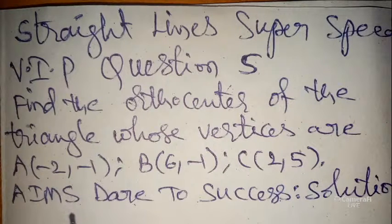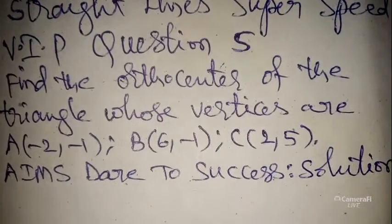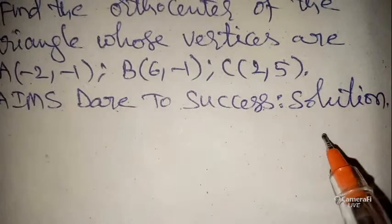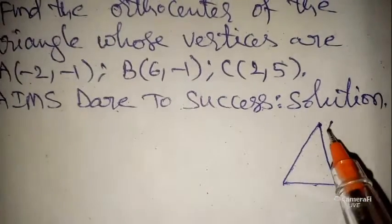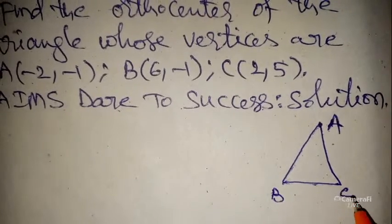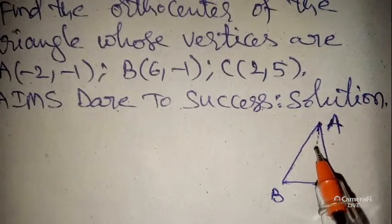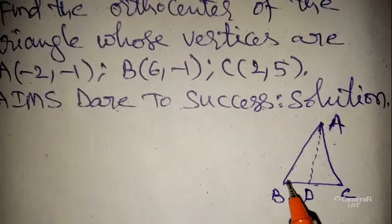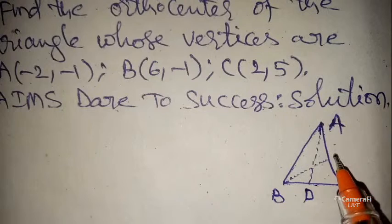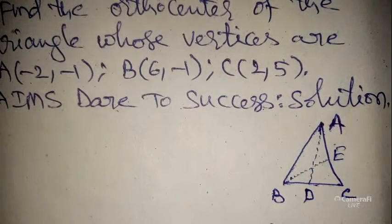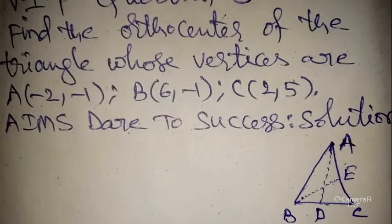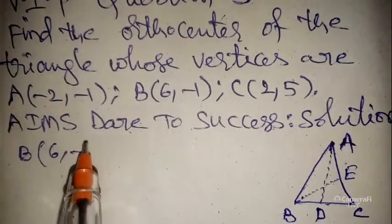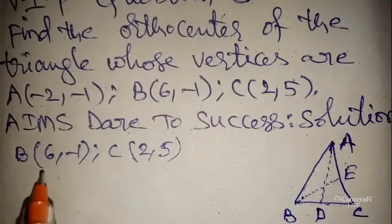Now I want to start the solution. By using these three points I want to draw a triangle ABC. From point A to side BC, you can draw a line with ending point D. From point B to side AC, the ending point is E. The side BC has point B at (6, -1) and point C at (2, 5).